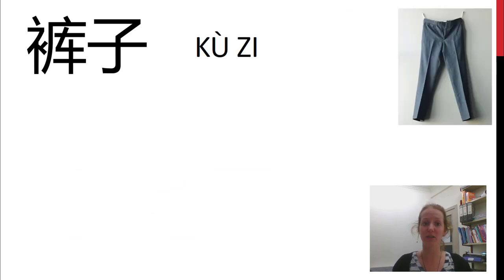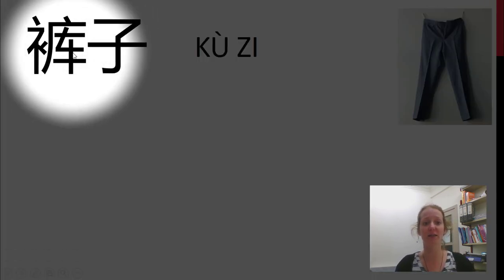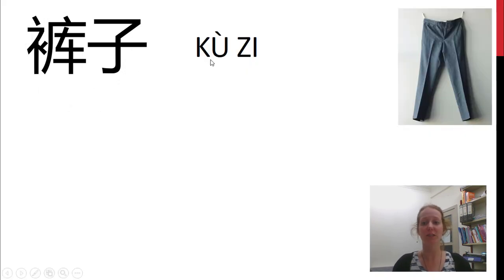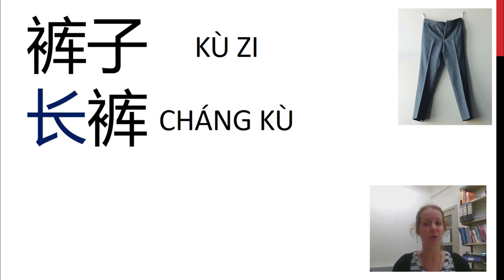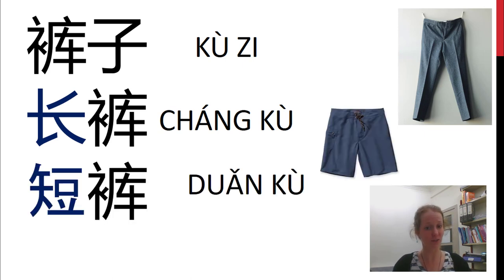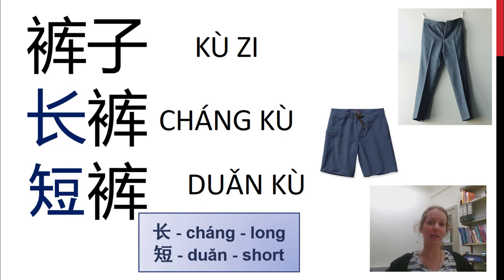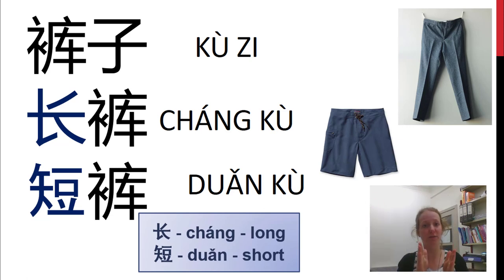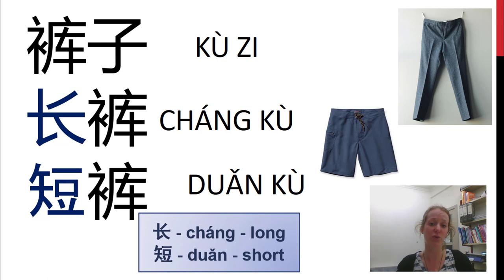这是什么? 这是裤子. Trousers. On the left hand side we've got the radical for clothing, and on the right hand side is the sound part. 裤子 is trousers, but we have different types: 长裤子 are long ones, and 短裤 are shorts. 长 means long in length, while 短 is short in length. We can use 长 and 短 to describe other clothing too — 长裙 is a long skirt or dress, and 短裙 is a short skirt or dress. 裤子 — trousers.